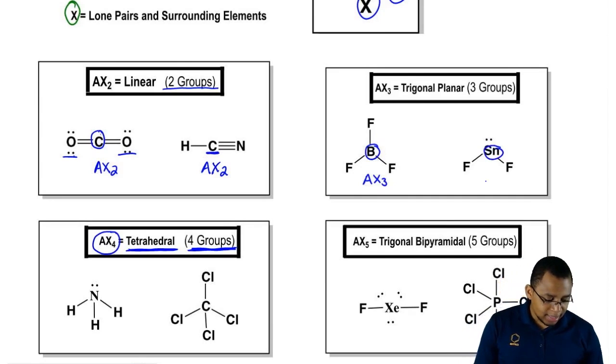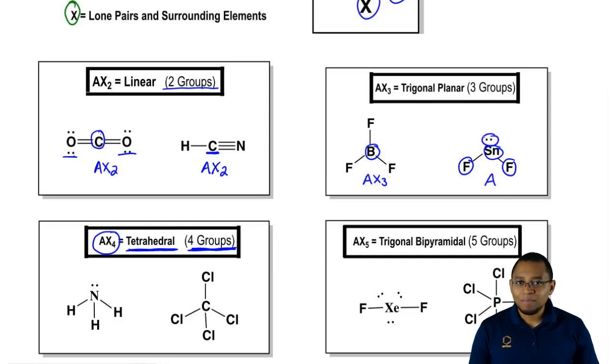SnF2, Sn is the central element A. It's surrounded by two surrounding elements and a lone pair. Remember, we treat surrounding elements and lone pairs as the same. We treat them both as X. We have three groups, so AX3.